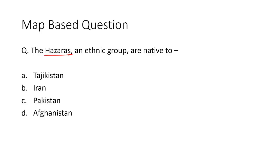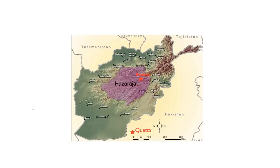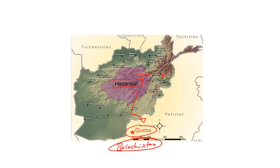Now let us take up a map-based question. The Hazaras, an ethnic group, are native to Afghanistan — Option D is the right answer. The Hazaras are an ethnic group native to a particular region in Afghanistan known as Hazarjat, a mountainous region in the central highlands of Afghanistan. Over the years, the Hazaras have migrated to Pakistan as well, settling in Quetta and other parts of Balochistan. The Hazaras have faced religious persecution at the hands of radical Sunnis in both Afghanistan and Pakistan.